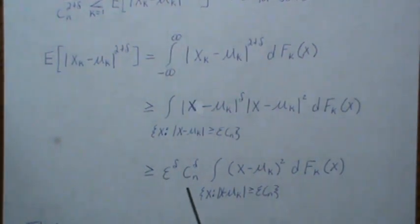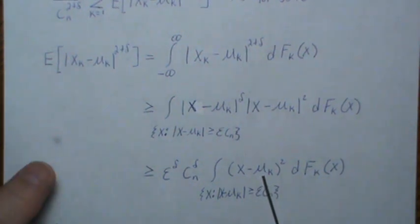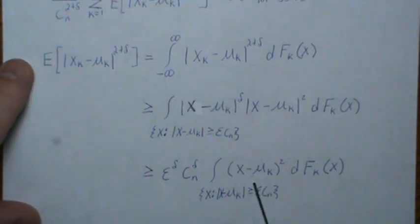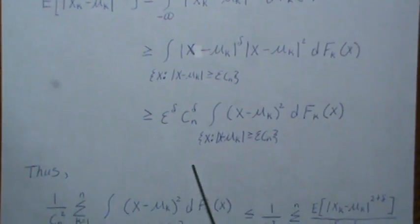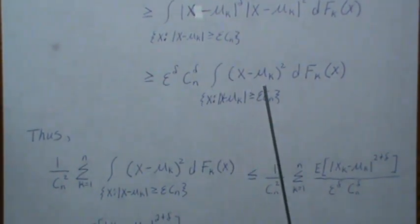Now if we sum from k equals one to n on both sides, we get what follows.